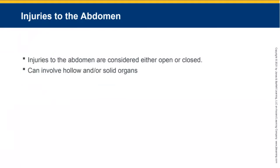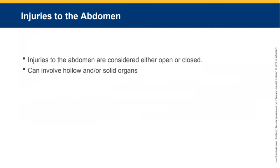Injuries to the abdomen are considered either open or closed, and can involve hollow or solid organs. For open abdominal injuries, the abdominal wall is penetrated and organs may be exposed, with a high likelihood of infection from outside. For closed abdominal injuries, the wall of the abdominal cavity is not perforated, but blunt force can still damage underlying organs. You will have pain and bruising but no open wound — always suspect that underlying organs can be damaged.